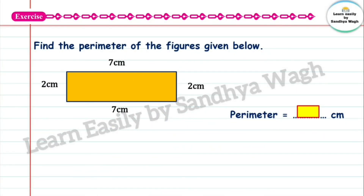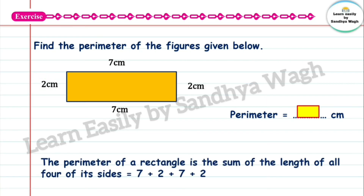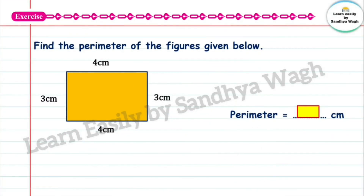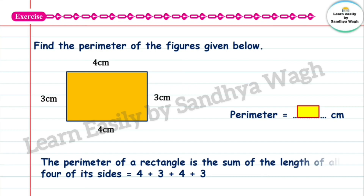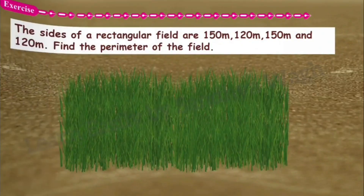This is a rectangle with sides of 7 cm, 2 cm, 7 cm, and 2 cm. The perimeter is the sum of all four sides. So 7 plus 2 plus 7 plus 2 is equal to 18 centimetres. The perimeter of this rectangle is 18 centimetres. The next rectangle has sides 4 cm, 3 cm, 4 cm, and 3 cm, giving a perimeter of 14 centimetres.